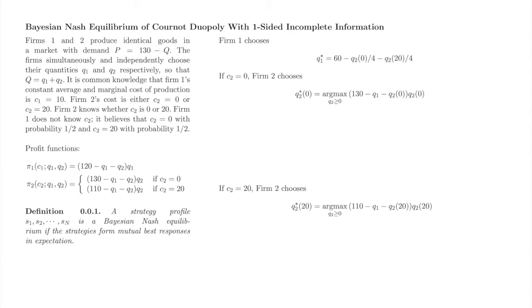Firm 2 has two possible types and learns the value of c2 prior to selecting q2. Firm 2 therefore solves two profit maximization problems, one for each type. Let's first solve the problem for c2 equals 0, differentiate with respect to q2 of 0, and solve for q2 star of 0. We'll use the product rule here. After some algebra, here's firm 2's best response when c2 equals 0.